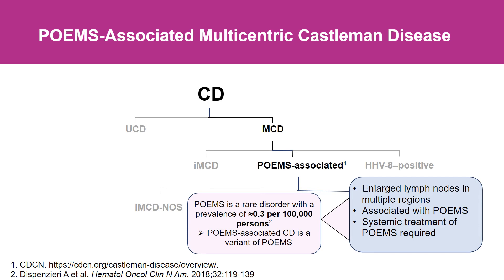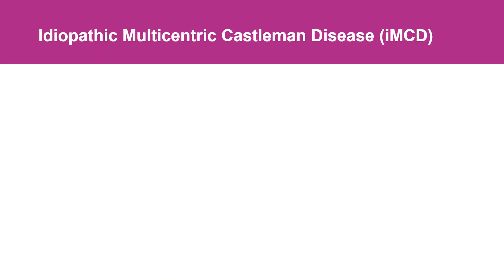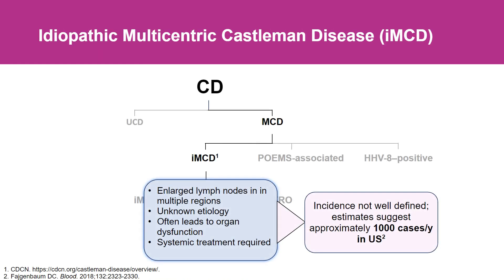There is also POEMS-associated multicentric Castleman disease, where there's a monoclonal plasma cell population driving the lymphadenopathy. Finally, what we call idiopathic multicentric Castleman disease — these are patients with multiple regions of enlarged lymph nodes and a cytokine storm, but no evidence of HHV8 and no evidence of a cancer. These are idiopathic; we don't know the cause.